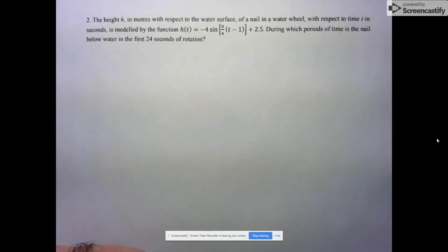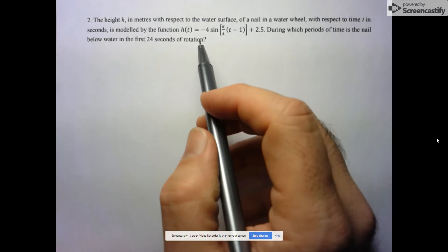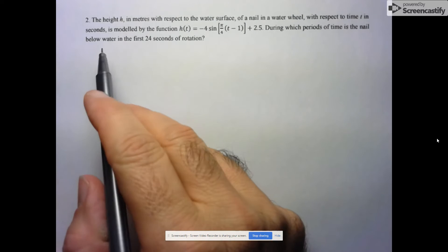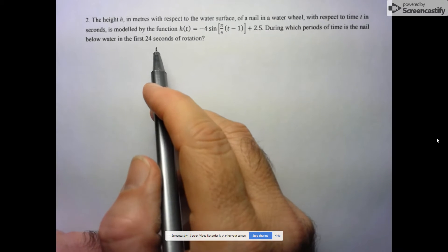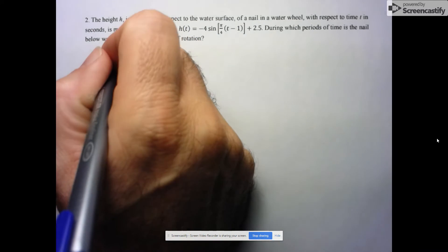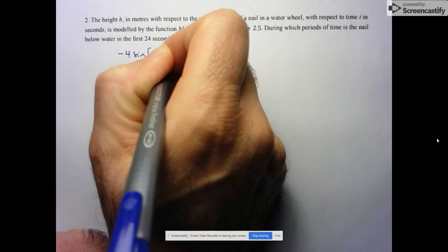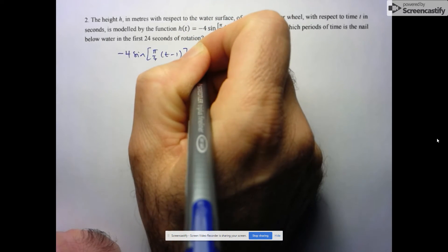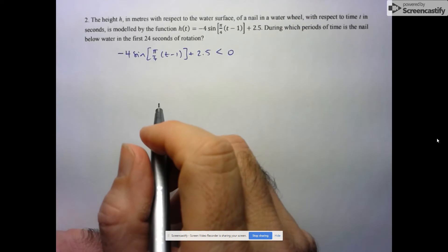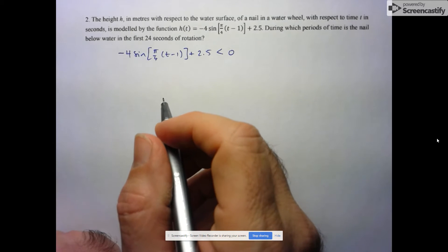Hi folks, we're going to take a look at this question from the homework. They give us the model for the height of a nail on a water wheel that's going round and round. It goes in and out of the water, and they want us to determine the times at which it's below water in this time constraint.